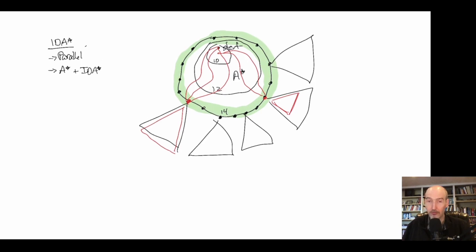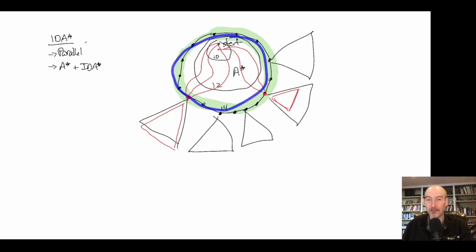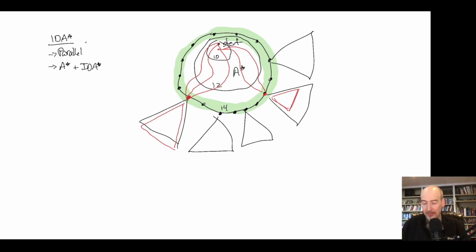Whether this approach beats a transposition table really depends on low-level implementation questions. This idea has been looked at in many forms over the years, but the recent paper shows that with a good implementation — carefully considering how you keep the tree in memory and avoid duplicates — it becomes very efficient. In that paper they showed roughly a five times speedup over regular IDA*.